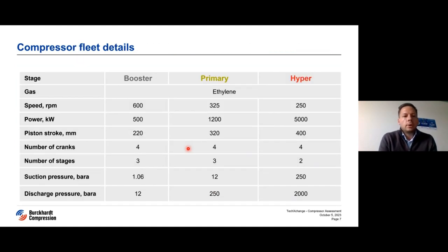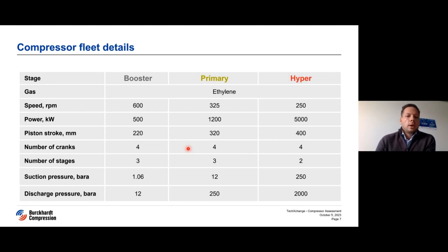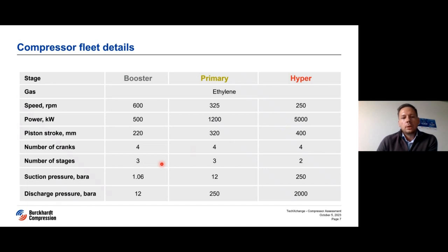These nine compressors in three types are Burkhardt compressors, all compressing ethylene, but their design varies greatly, mainly by size and power. If we speak about the booster, it has 500 kilowatt prime drive power, up to the hyper compressors, the biggest one, with five megawatt power. They are different-sized horizontal opposite compressors with different numbers of stages: three stages for boosters, three for primaries, and two for hypers. What is quite interesting is the wide range of operating pressures — from nearly atmospheric pressure of one bar on the suction of the booster, up to about 2,000 atmospheres on the discharge of the hyper, from which gas is taken to the reactor.